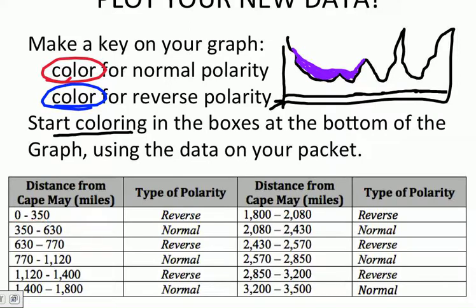Okay, the first one here is reverse, so I'm going to use my blue color to color code the boxes from zero miles, so right at the edge of my graph, all the way to the point where it says 350. So, I'm just going to color in that section of those bottom two boxes. Once that area is finished, I'm going to move on to my normal, coloring from where I left off at 350 to the next spot of 630. And so on and so forth, going back and forth between those two datas.